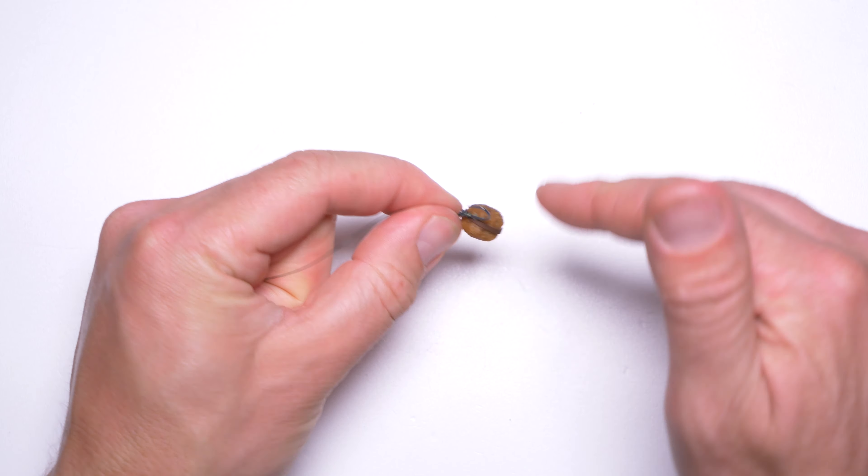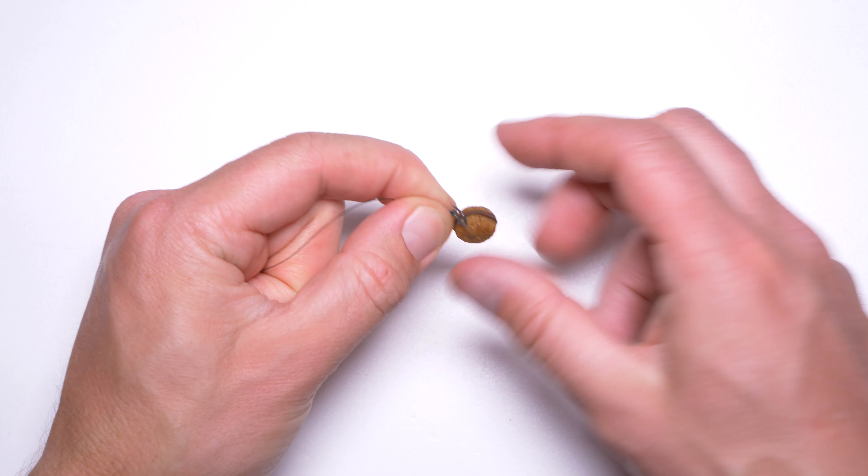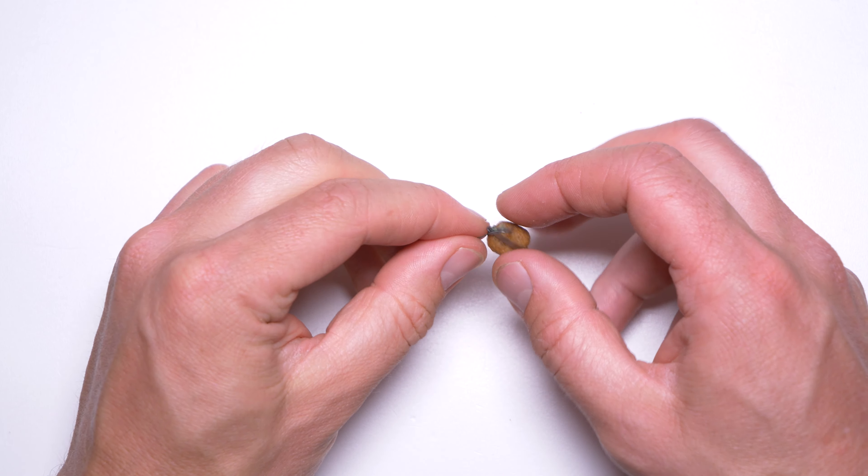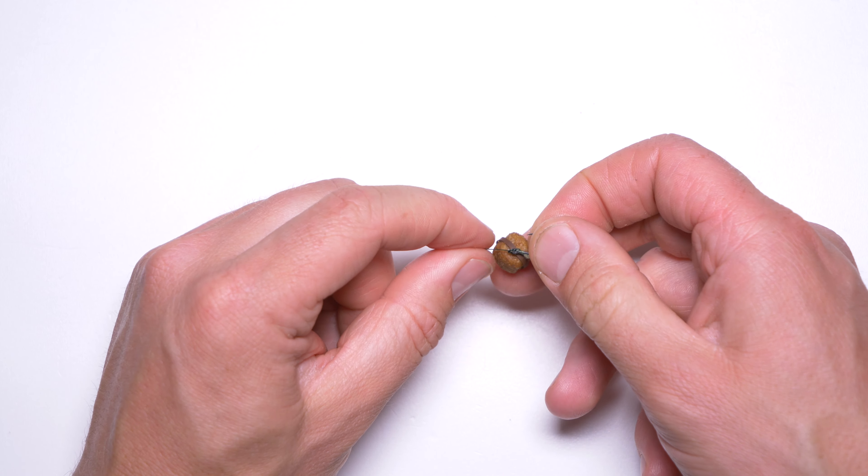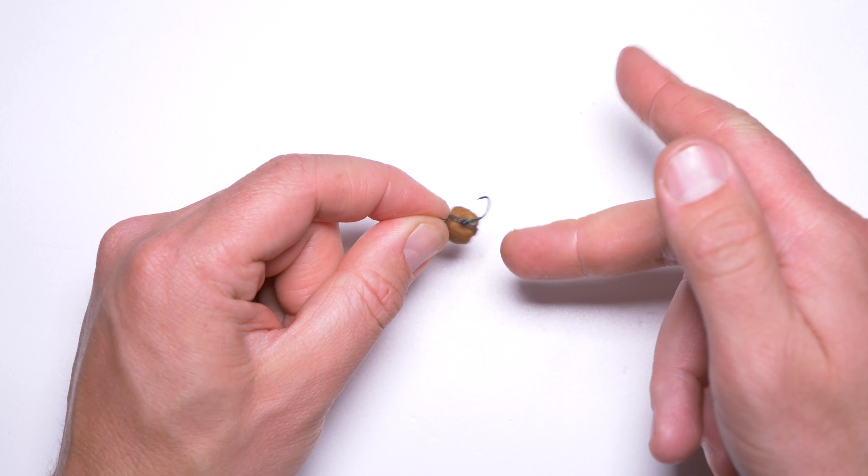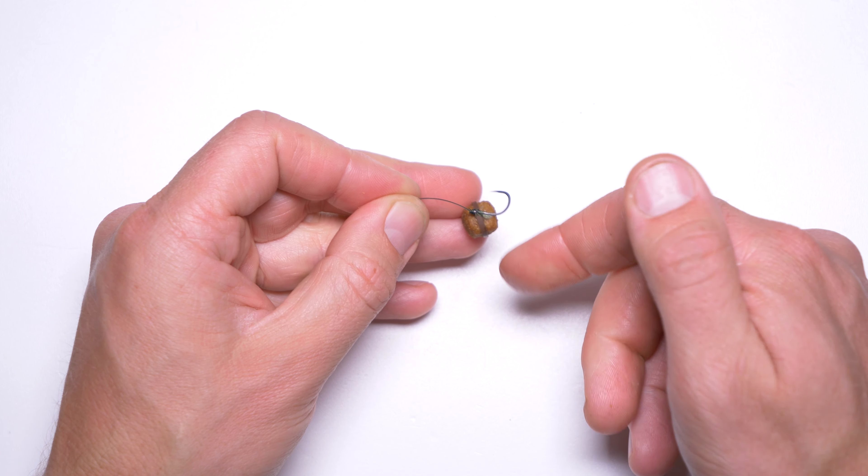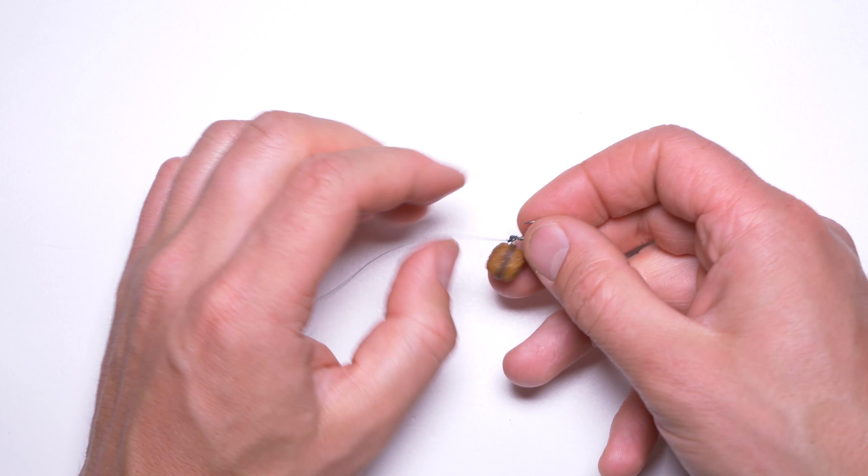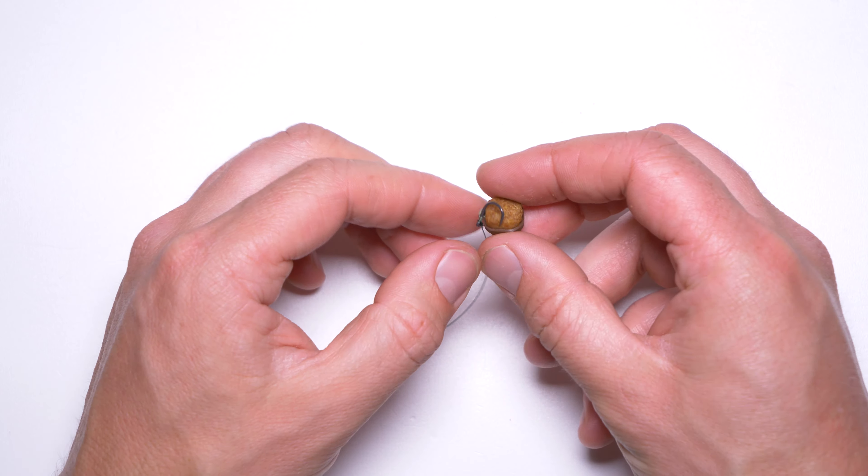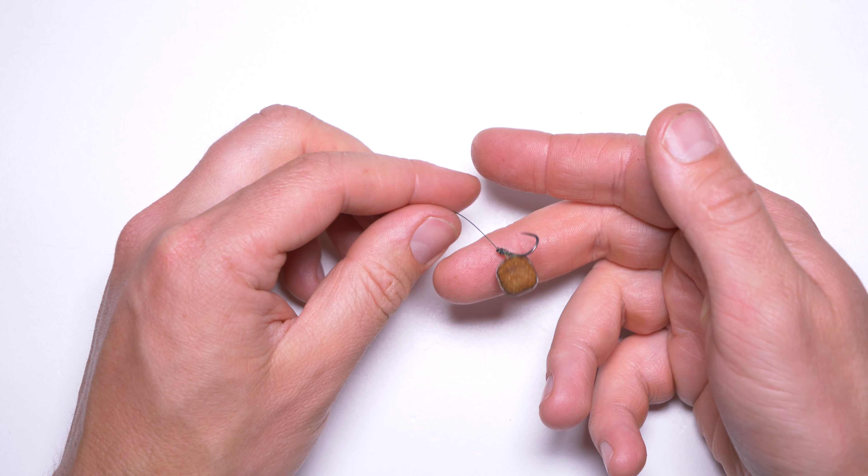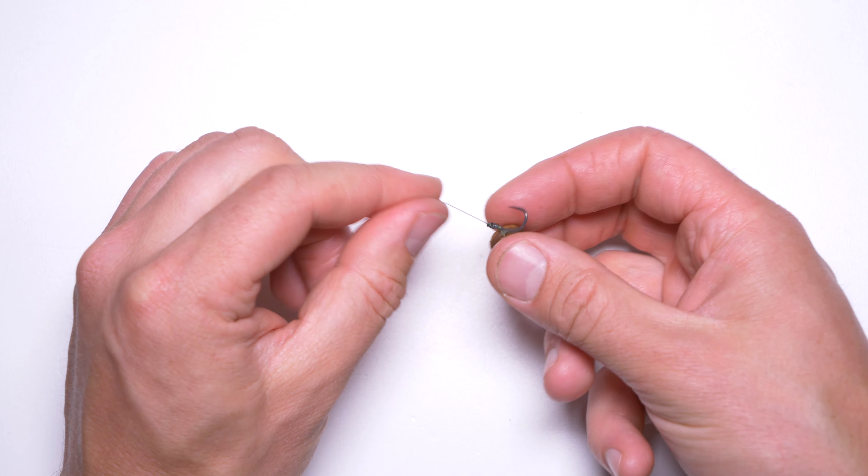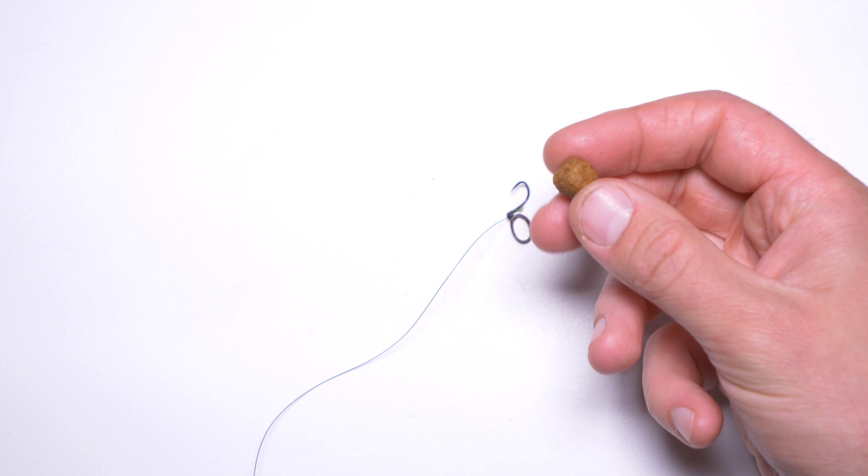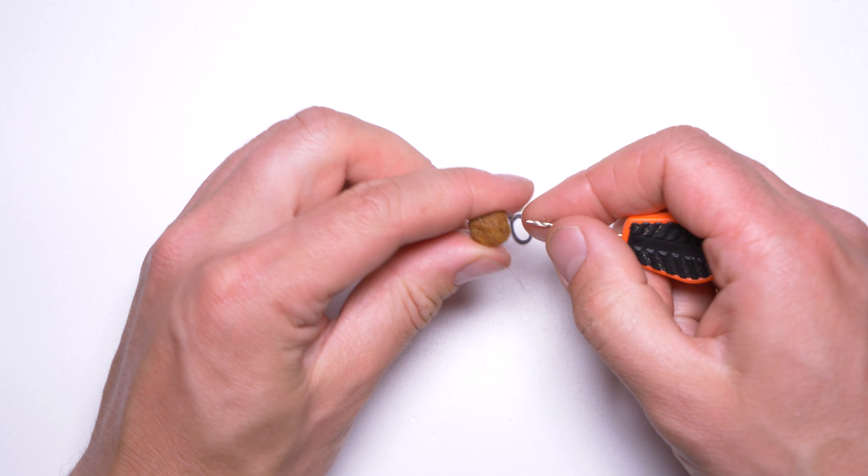But this type of hook bait attachment sometimes is not good enough. Sometimes you need to cast far, or sometimes you won't be using any floats and all the weight to cast will be just this little hook bait, which obviously is not very heavy. Then quite often when you're punching this little thing out, the hook bait will come off. Then this very little trick: just drill the bait.